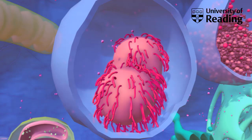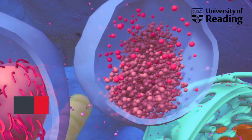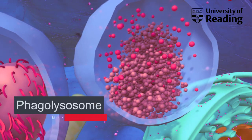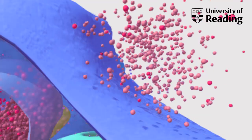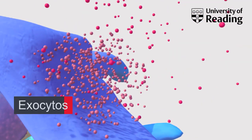The phagosome then fuses with a lysosome, which releases digestive enzymes and causes the inside of the phagolysosome to become very acidic. This destroys the bacterial cell, and the amoeba can now take up nutrients from the phagolysosome into the cytoplasm for its own nutrition. Any remaining components of the bacterial cell that the amoeba cannot use are excreted via exocytosis.